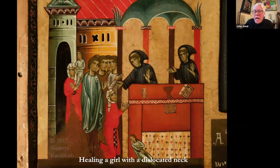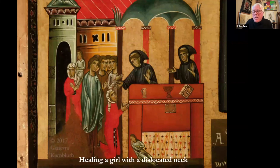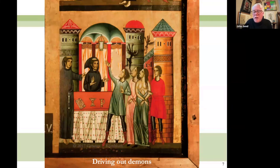The healing of a girl with a dislocated neck shows what I would call continuous narrative — the girl with the neck problem appears twice. She appears coming through a door on the left, and then kneeling in front of St. Francis to be healed. In another panel, St. Francis is driving out the demons — you can see the black figure demons coming out of the mouth of one of the awestruck people witnessing this miracle.